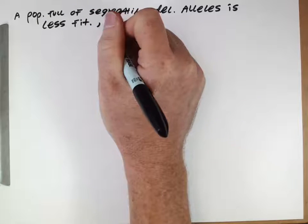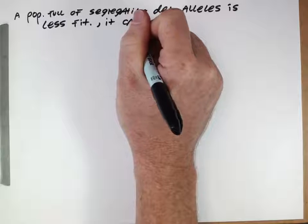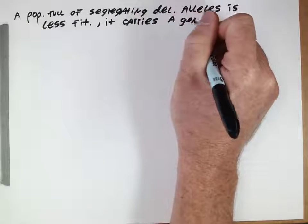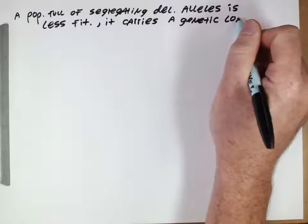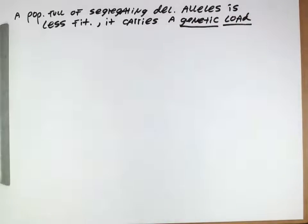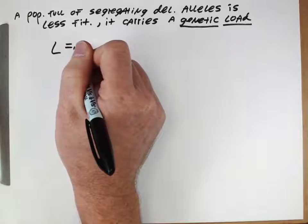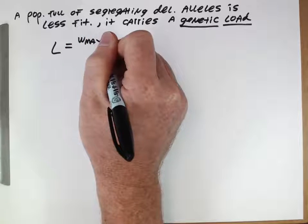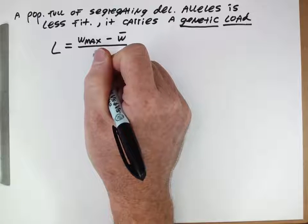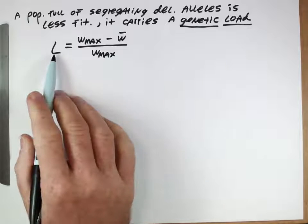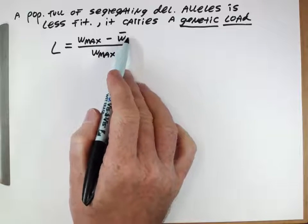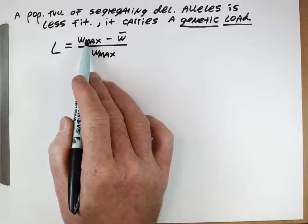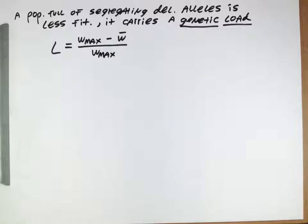We term this, we say that that population carries a genetic load. So that's a technical term for when a population has a lower fitness than it could potentially have because it has a large number of individuals with these deleterious alleles. And we're going to represent this genetic load with this value L, as w_max, which represents the maximum fitness minus the mean fitness relative to the maximum fitness. So this number is representing how much lower the mean fitness the population is compared to what it could be if none of the individuals are segregating these deleterious alleles.